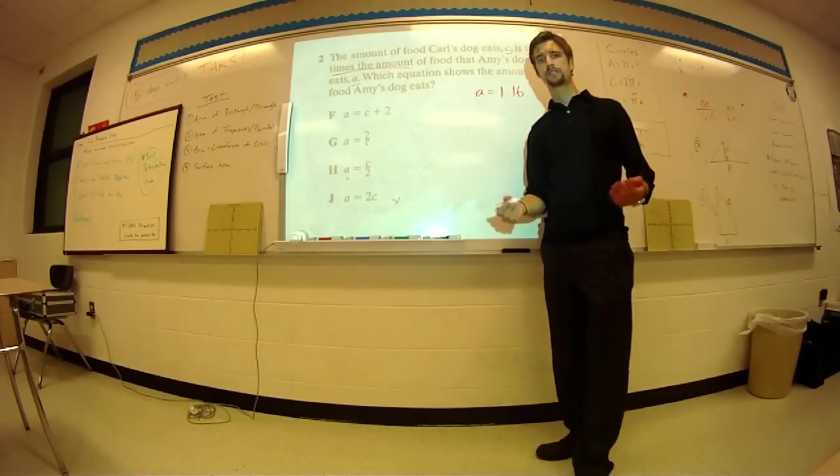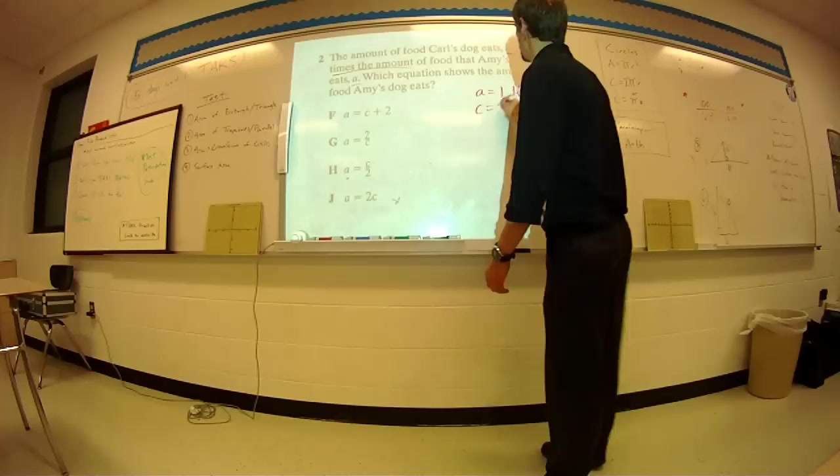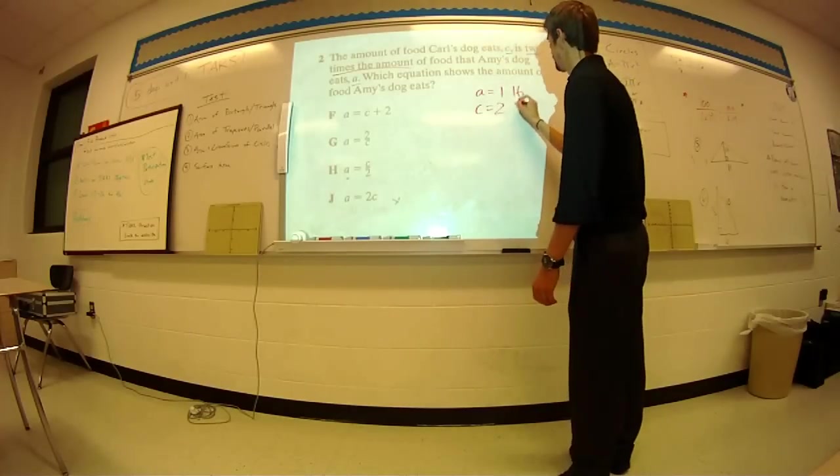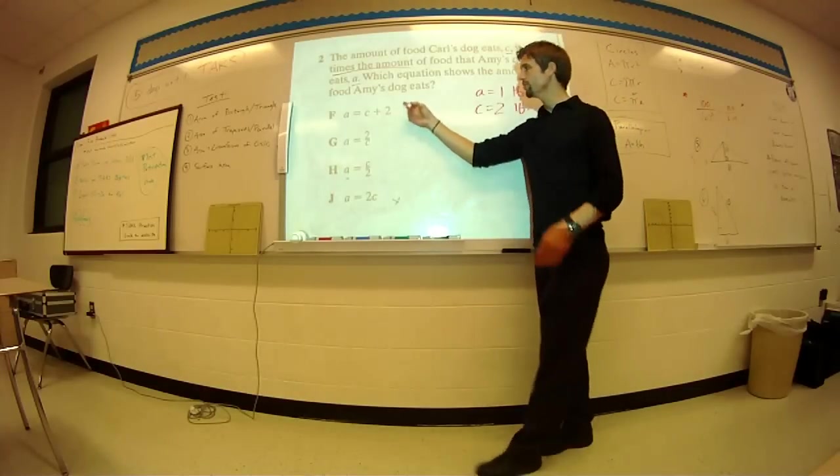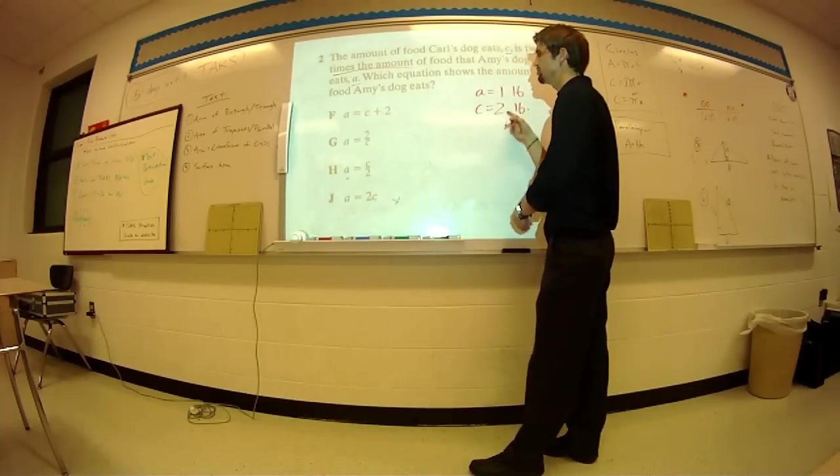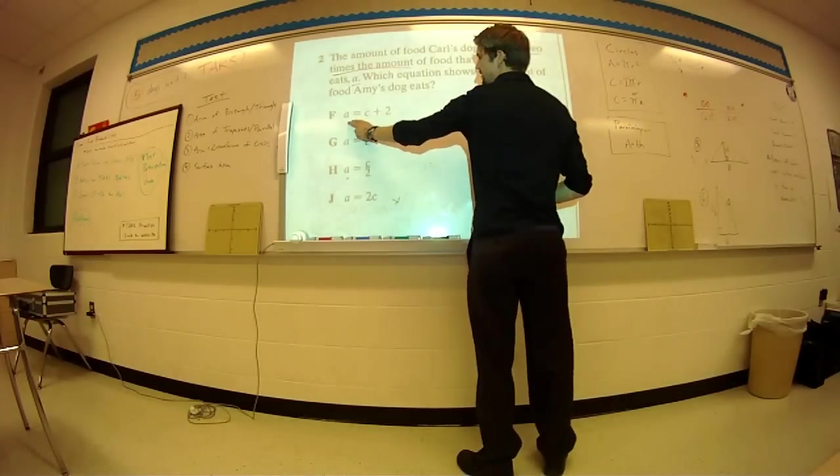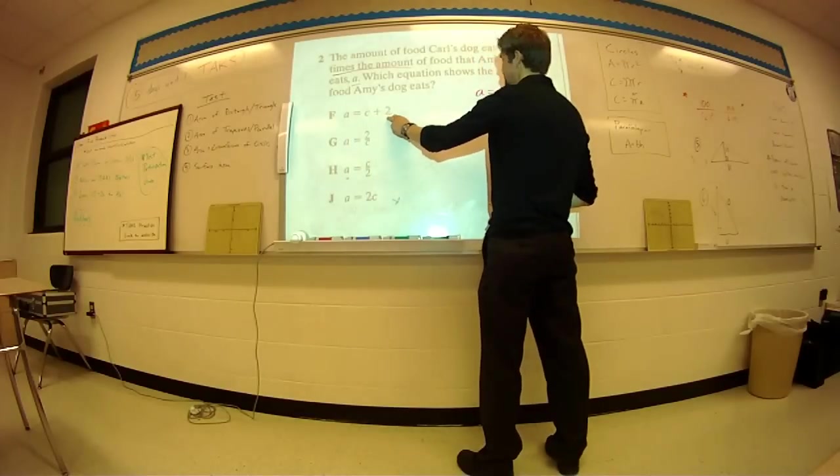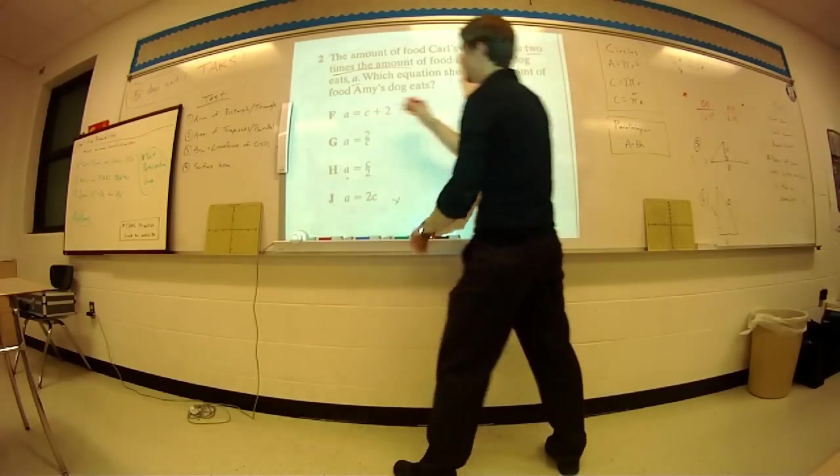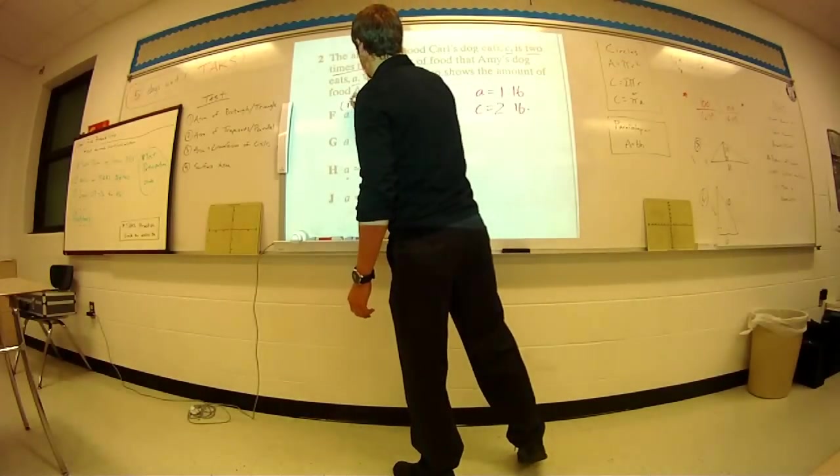If Amy's dog, for example, eats one pound of food, therefore Carl's dog is going to eat two pounds of food. So you could just look at which formula does this one and two work. If I plug a one in for here, and then I get two plus two. If I put a one for there, I'm just going to show you every one.